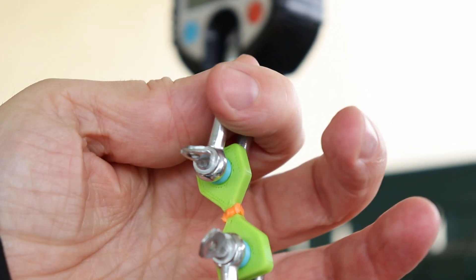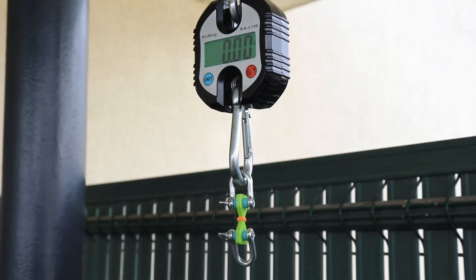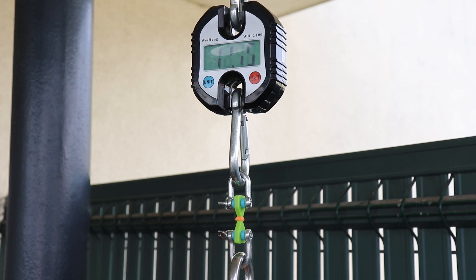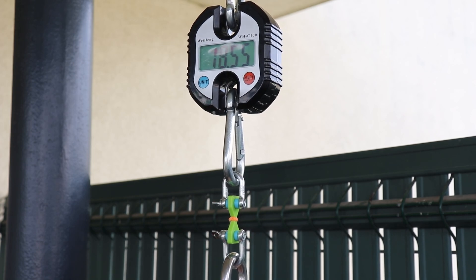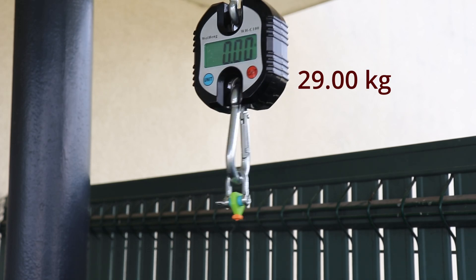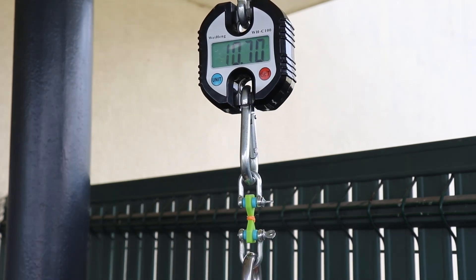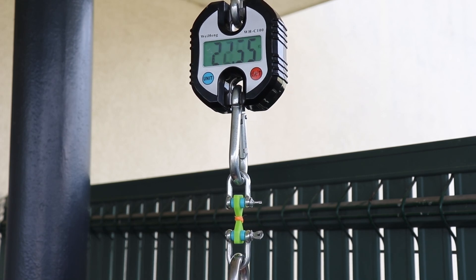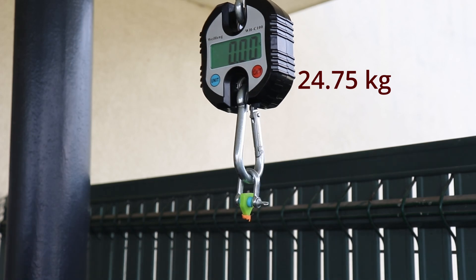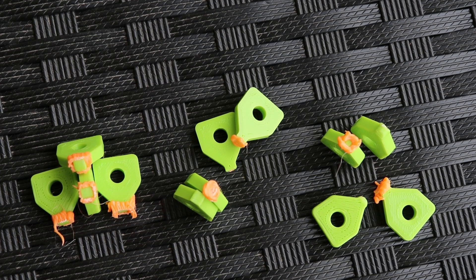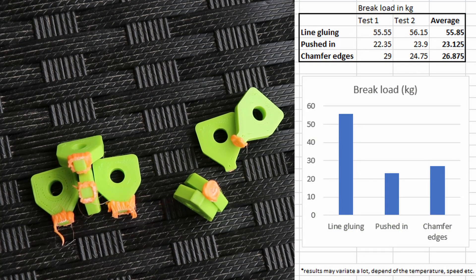And now test objects glued on the chamfered edges. Not bad but let's measure it one more time. Interesting better than I expected. This means we can glue parts with a 3D pen. Ugly solution but it works.